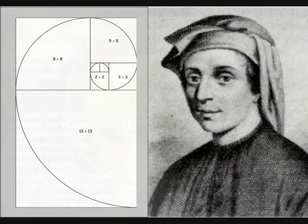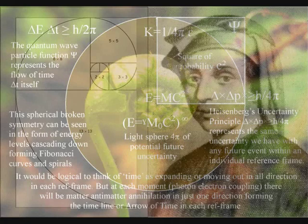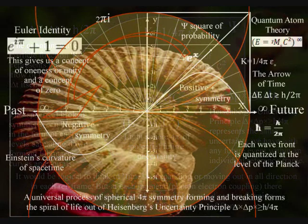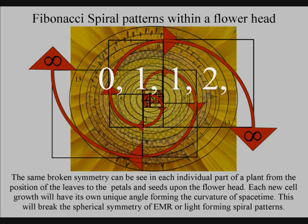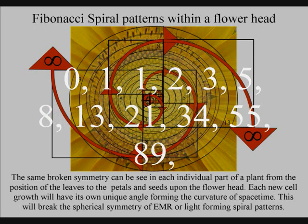This theory predicts that the Fibonacci spiral is not formed because of economy of space or economy of growth, but because space and time is being formed by this process of symmetry breaking. The Fibonacci numbers that represent the Fibonacci spiral mathematically lead directly to the third prediction of this theory.